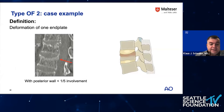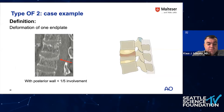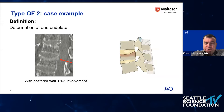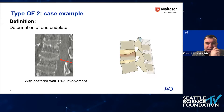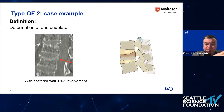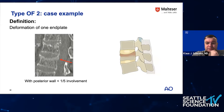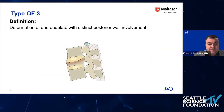Even if you have a minor posterior wall involvement, it would still be OF2. We prefer to talk about deformations rather than fractures because osteoporotic fractures differ from a morphological point of view — they have more deformations, sometimes cracks, sometimes a classical fracture appearance, but they can look differently. So we decided to talk about deformation rather than fractures.